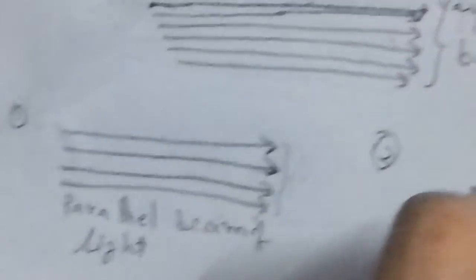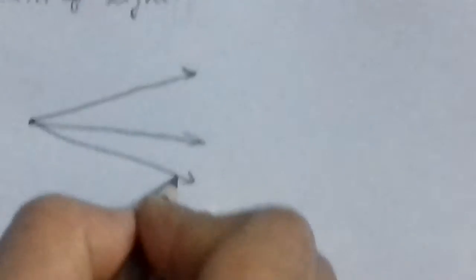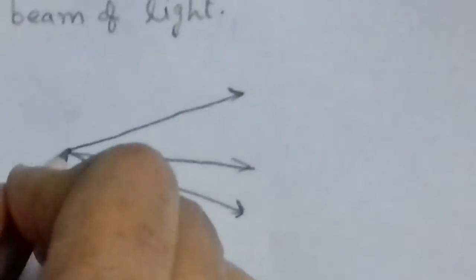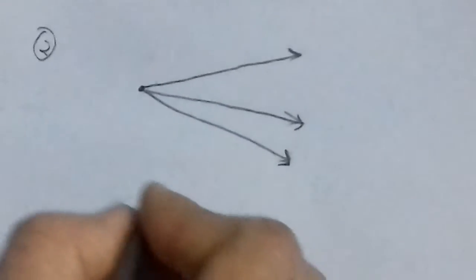Second is divergent beam of light. A beam of light consisting of rays diverging from a point source is called a divergent beam of light. Suppose this is a source, and rays travel outward like this — these rays are diverged from the source. So these rays are called a divergent beam of light.